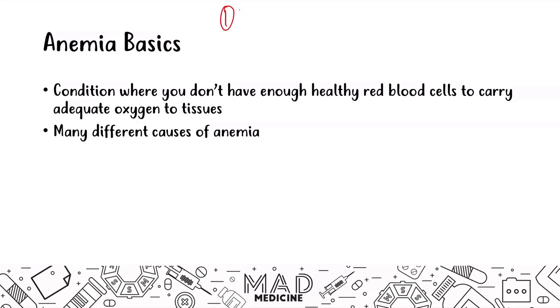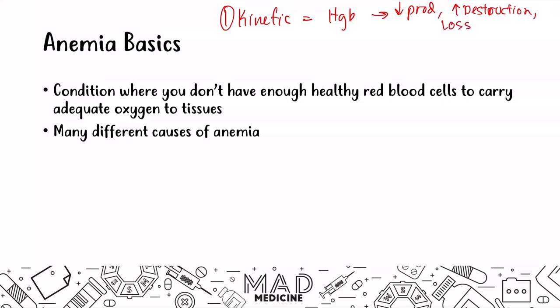You have the kinetic approach, and in the kinetic approach, you are looking at hemoglobin specifically. So if you have a decrease in hemoglobin, you will have an anemia, and this is all going to be decreased production, increase in destruction, or loss of red blood cells. That's what's happening in the kinetic approach.